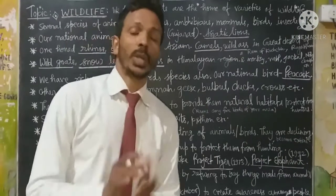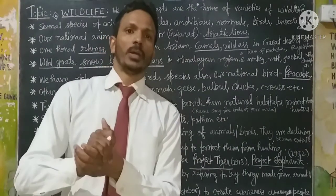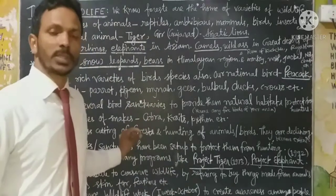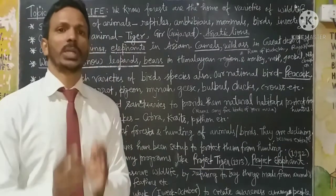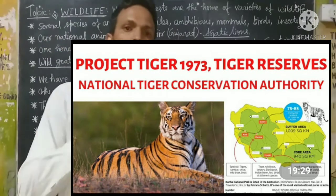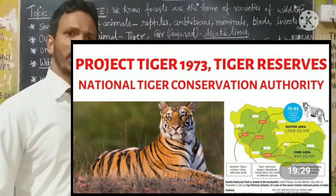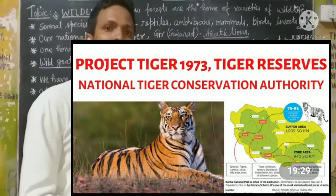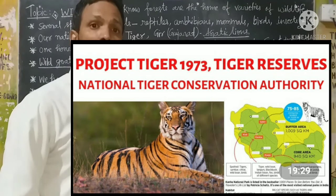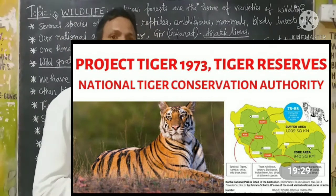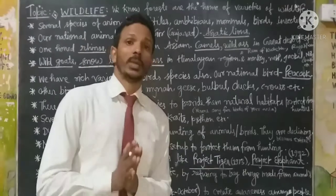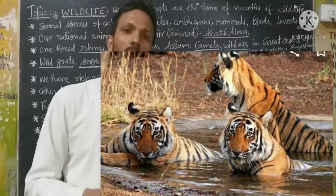Our government has also started different types of programs to protect animals, like Project Tiger. Project Tiger was a very important program which was started in 1973 to save tigers, in the leadership of former Prime Minister Indira Gandhi. At that time, there were only 268 tigers left in our country.